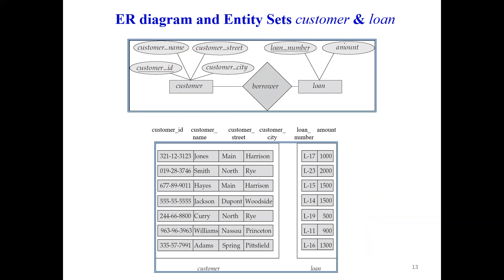An ER diagram showing customer and loan: customer has customer ID, customer name, customer street, and customer city. Loan has loan number as the key attribute and amount as another attribute. The relationship 'borrows' connects customer to loan. Customer ID identifies each customer uniquely, and loan number identifies each loan. A particular customer borrows a loan, represented in the ER diagram with appropriate notation.